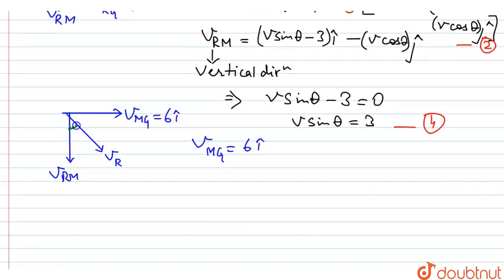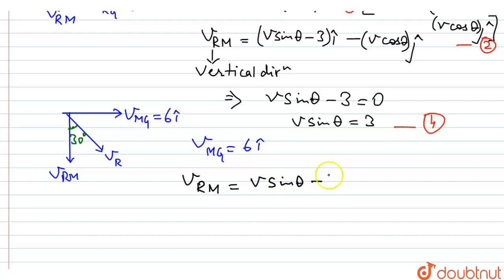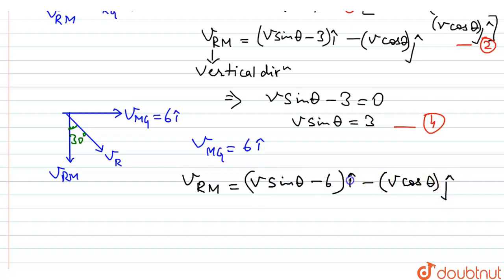The angle given in the question is that drops are falling making an angle of 30 degrees with the vertical. Writing the horizontal component of v_rm, we get v sine theta minus 6, because the velocity of man with respect to ground has changed to 6. The rest of the terms remain the same.